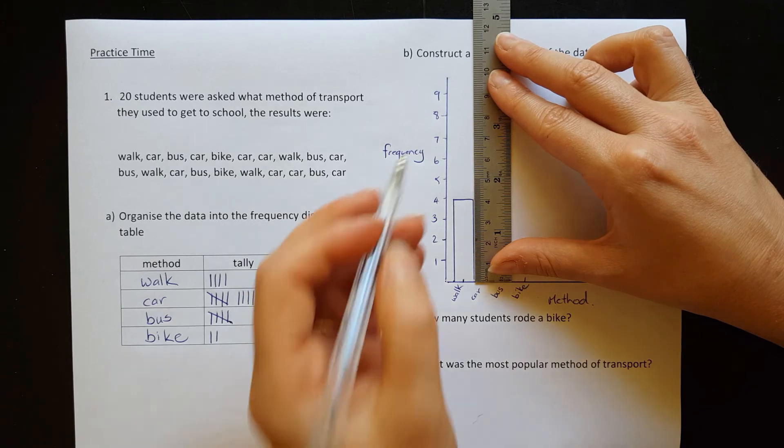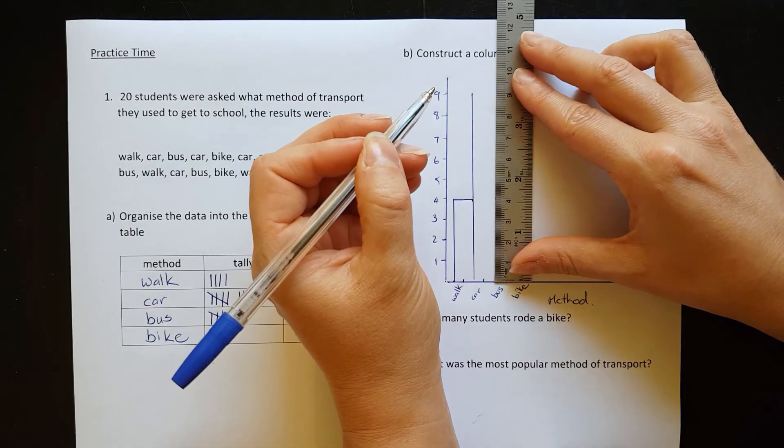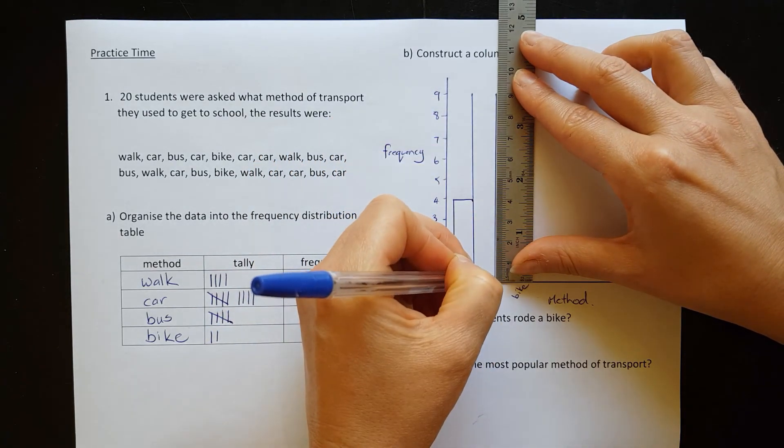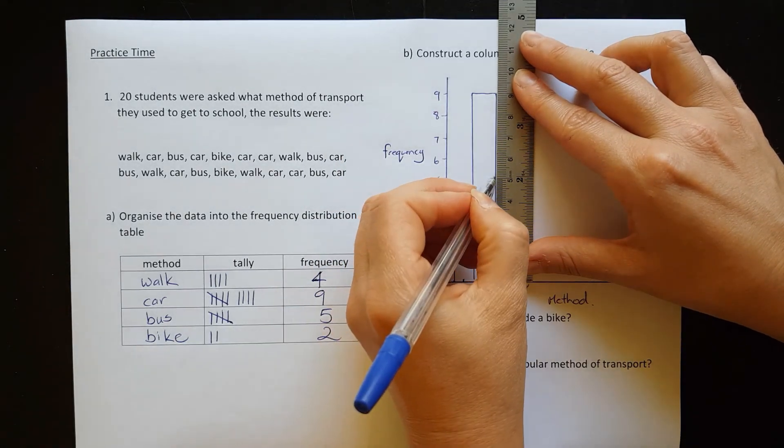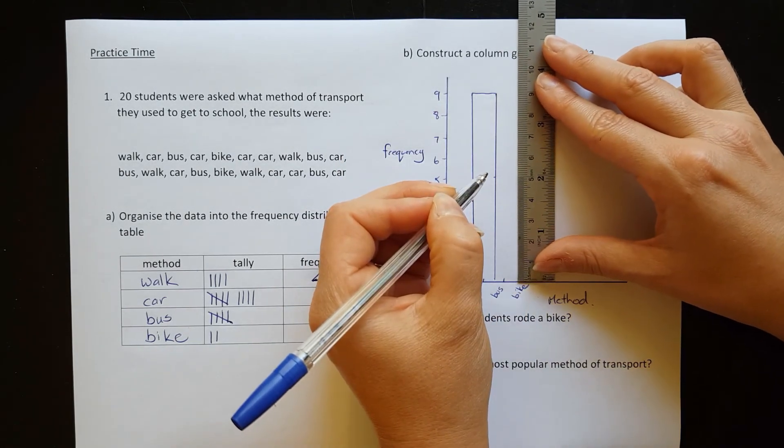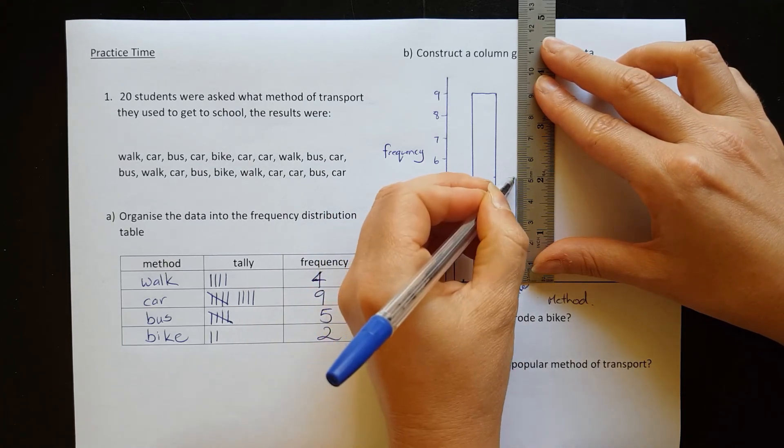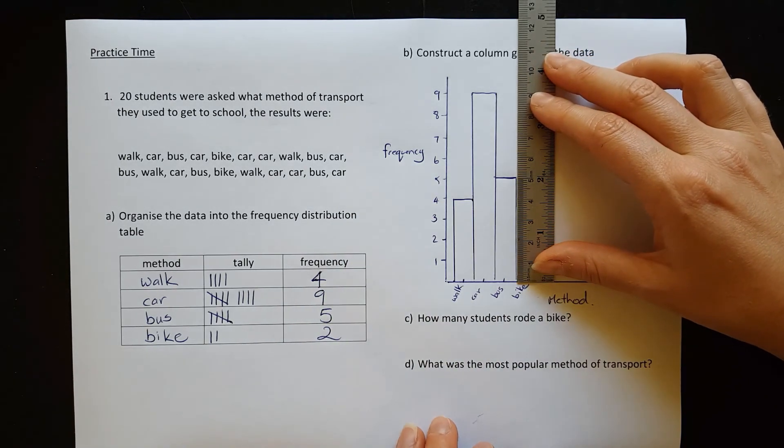Car, there was nine. So let's now raise that up to nine. Halfway to the next one. Flat across the top. Next one is five. So that's going to be here. Draw another line on the other side. Joining that up. And bike was two.